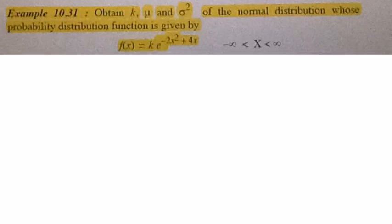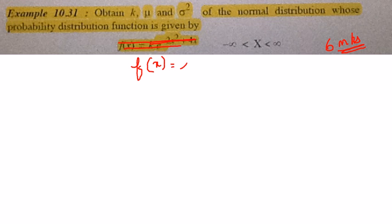Now we are going to see a sum which is actually similar to 10.31. It is also a 6 marks question but just a slightly simplified version. What is given in the sum is f(x) = k·e^(-2x² + 4x - 2). You have to find k, ν, and σ².